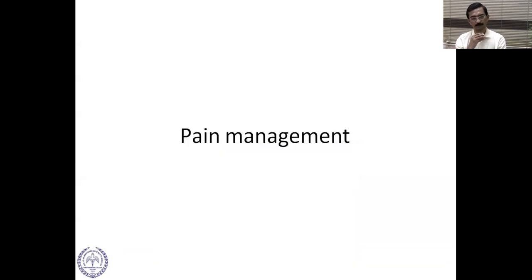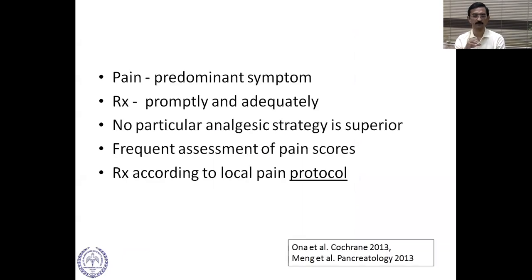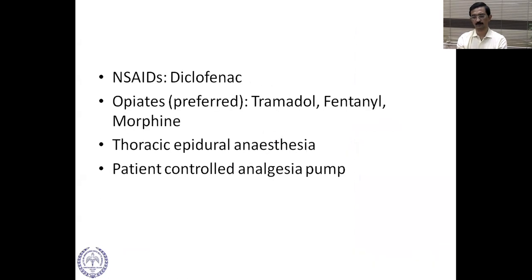A very crucial part of management is pain control, which is the predominant symptom. Treatment should be prompt and adequate. There is no particular analgesic strategy that is superior. Frequent assessment of pain scores is useful and you treat according to the local pain protocol. NSAIDs like diclofenac can be used. Opiates are preferred — we use tramadol, and if pain is severe, we may go up to morphine. Newer concepts include thoracic epidural anesthesia and patient-controlled analgesia pumps.